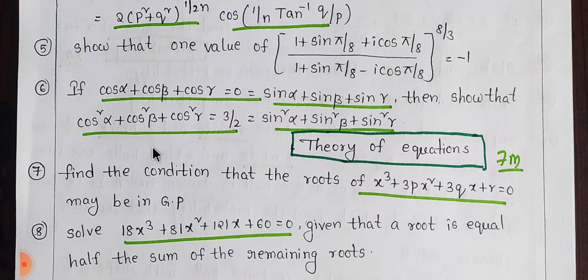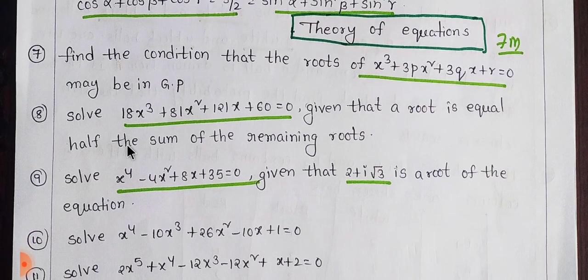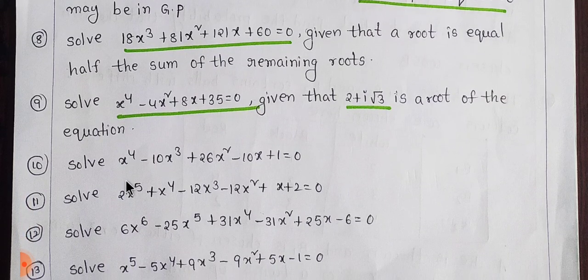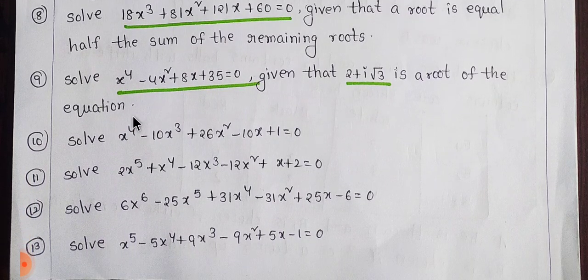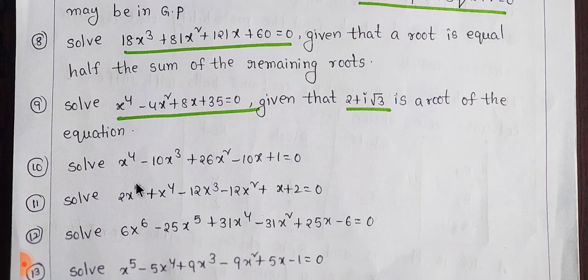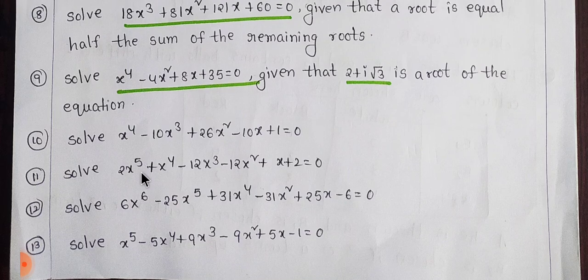The Theory of Equations is 7 marks. What problems are you going to do? 1, 2, 3, 4, 5, 6 — number 7 is going to be a model. So you have to do one. You will have to do the same model.